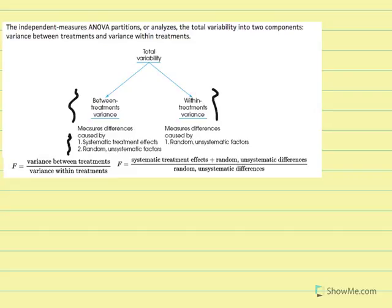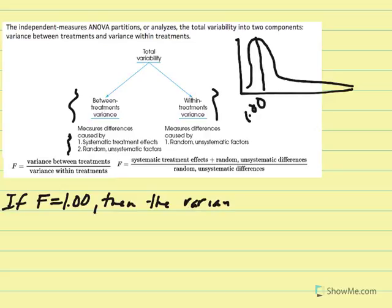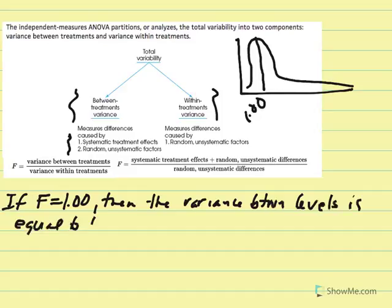When we create our F values we're constructing an F distribution, and this distribution is positively skewed. At the peak, that value is represented as 1.00, calculated by taking the variance between and dividing it by the variance within treatments. If F is equal to 1.00, we would conclude that the variance between conditions or levels is equal to the variance within levels.